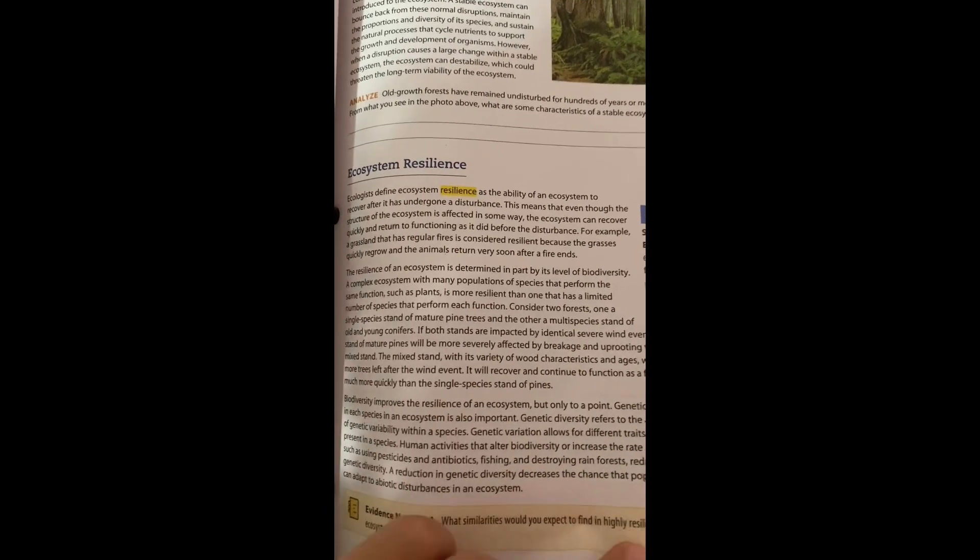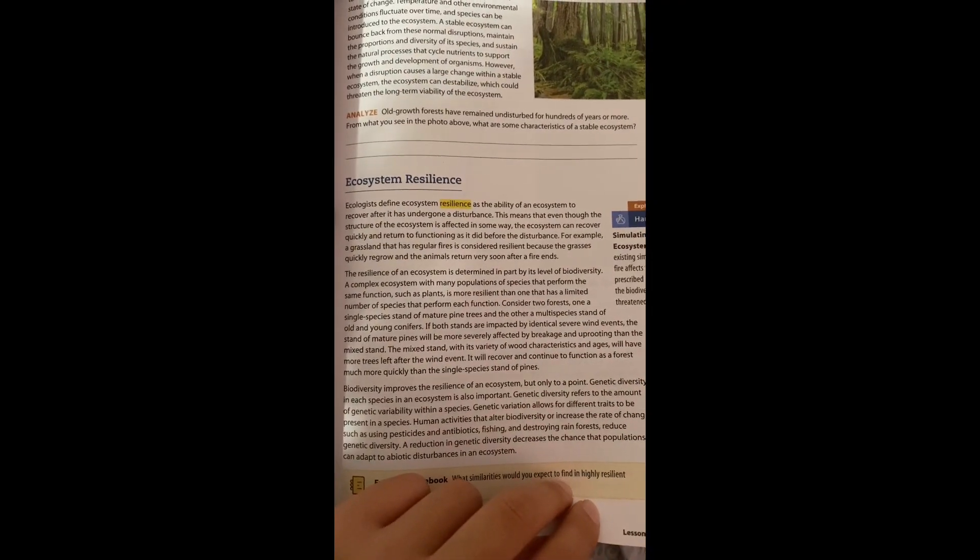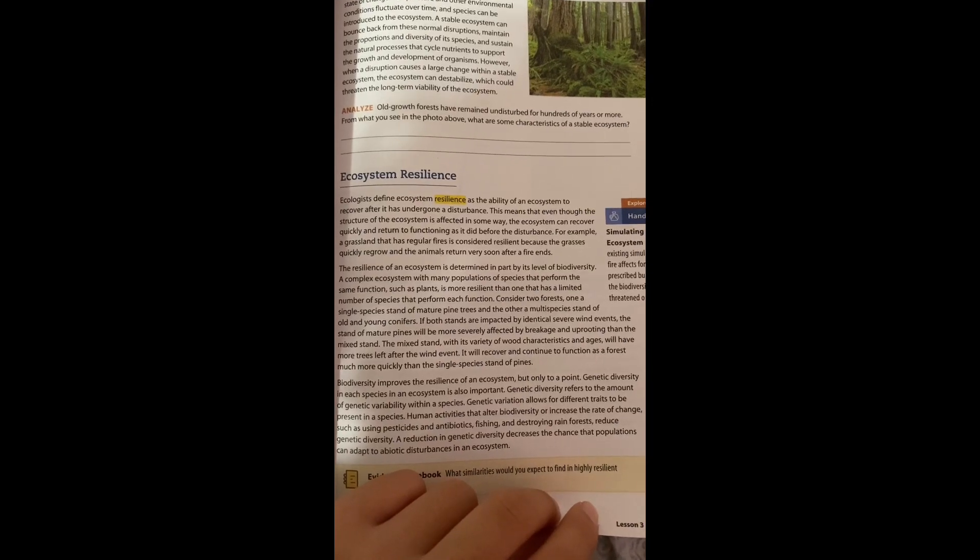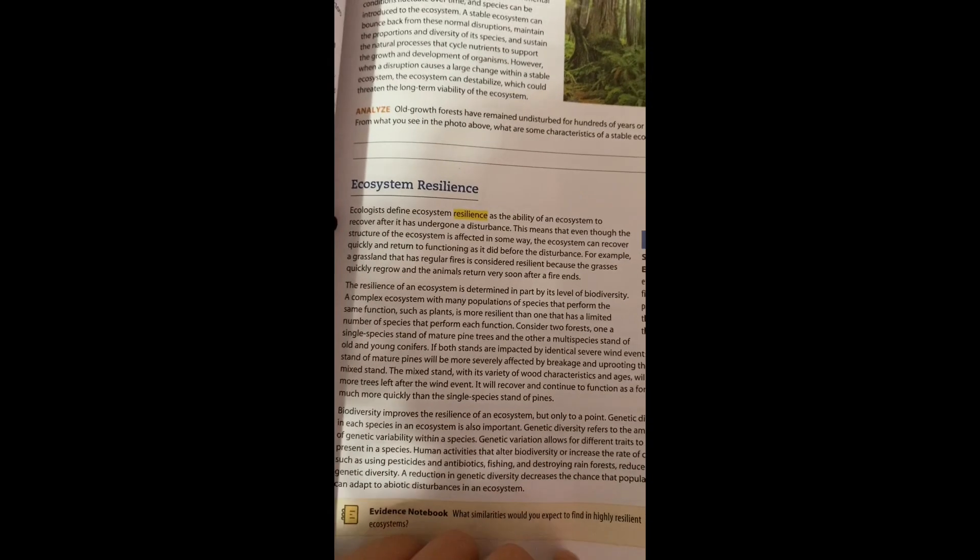An ecosystem's resilience is determined in part by its level of biodiversity. When an ecosystem has multiple populations or species that perform the same function, it is more resilient than one with fewer species performing these functions.